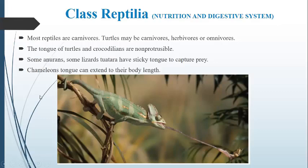Some iguanas and some lizards have a sticky tongue to catch their prey. They are close to the ground and use their sticky tongue to catch prey on the ground.